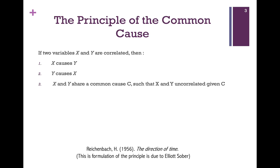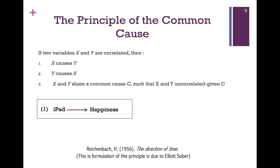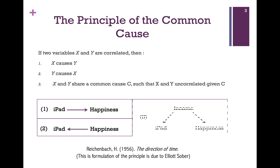So if there's a correlation between being happy and owning an iPad, either buying an iPad makes you happy, happier people are led to buy iPads, or there's some other explanation — perhaps wealthier people are both happier and more likely to buy an iPad. Although this principle goes back to the 1950s, it's still foundational for causal inference, because it's entailed by something known as the causal Markov condition, which I'll be describing in a future video.